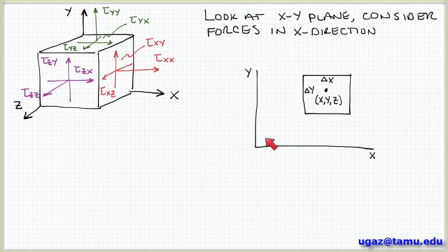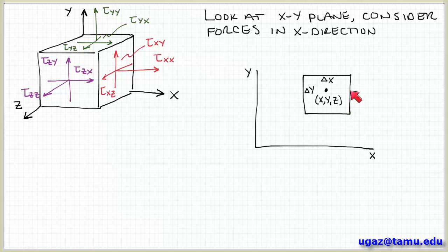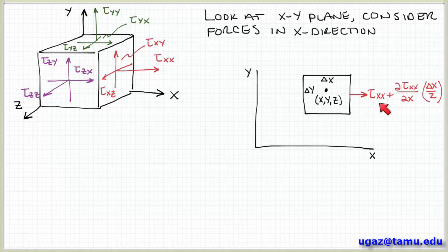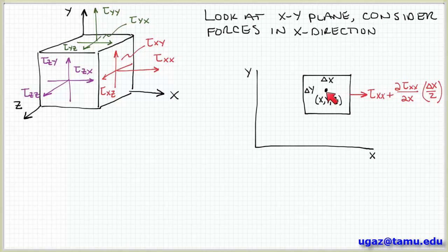With this surface arrangement, we can think about the forces acting on these surfaces in the same way we talked about conservation of mass. At the right-hand surface, a force in the x direction produces a normal stress. That normal stress at this surface I can represent as tau xx, mapped to the point x, y, z in space, plus the differential change in tau xx with respect to x times the distance from the center to the surface, which is delta x over 2.